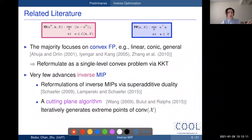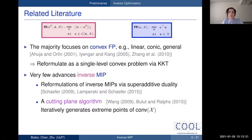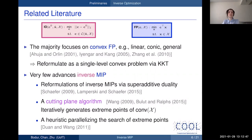Andrew Schaefer used super-additive duality to reformulate inverse pure integer programs, later extended with Lamparski to mixed integer inverse MIPs. Using super-additive duality they provided a polyhedral description of the inverse feasible set, but the resulting single-level formulation is an exponentially large linear program, so they can only address instances with very few decision variables. The only other main approach for general inverse MIPs is a cutting plane algorithm by Wang in 2009, also studied by Bulut and Ralphs in 2015.